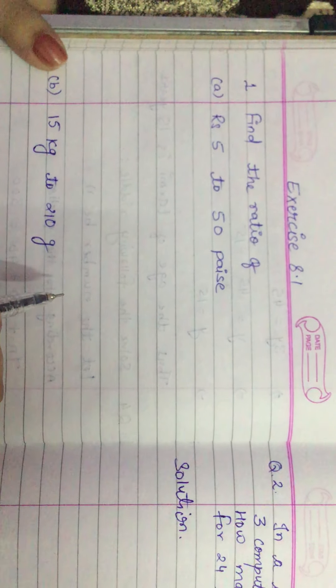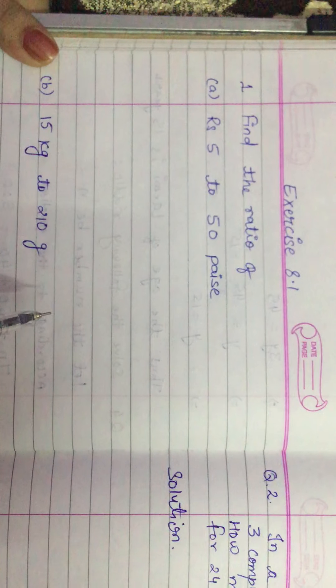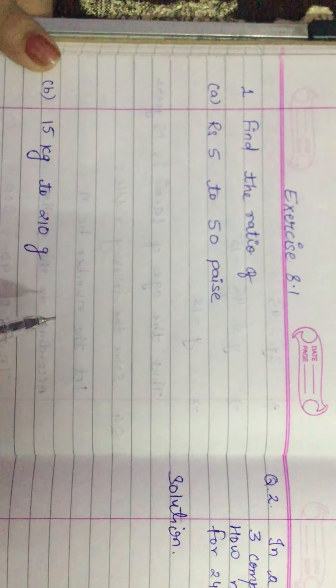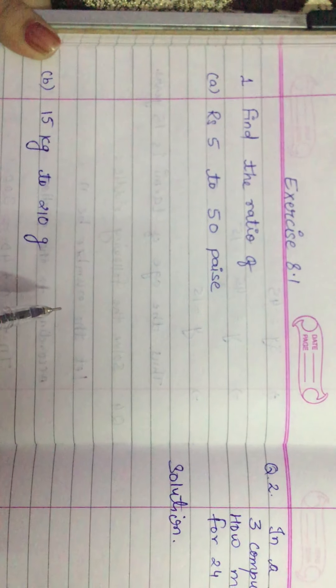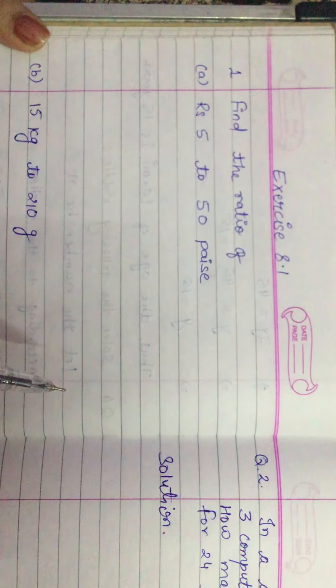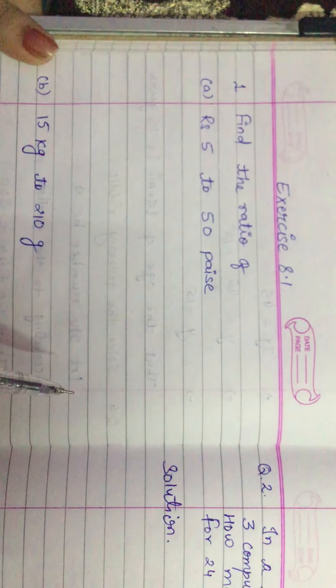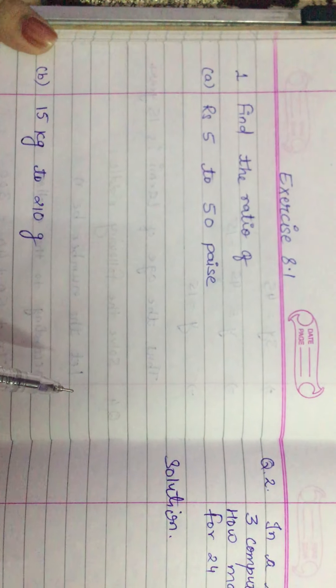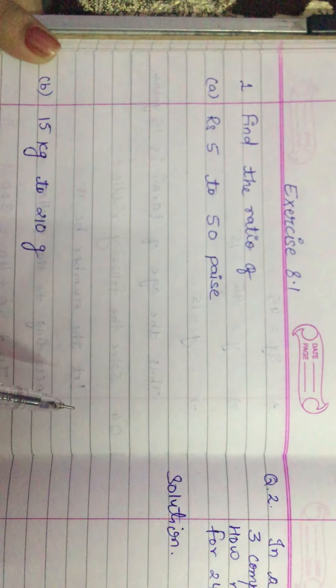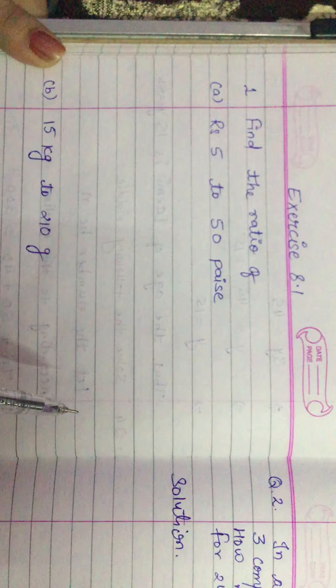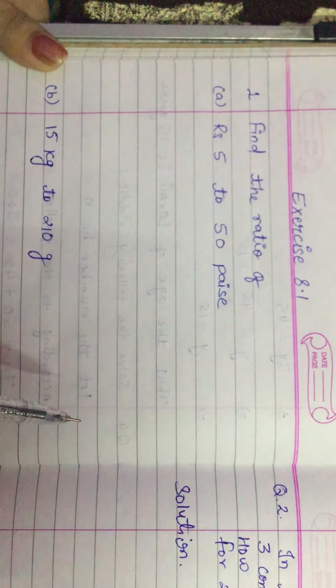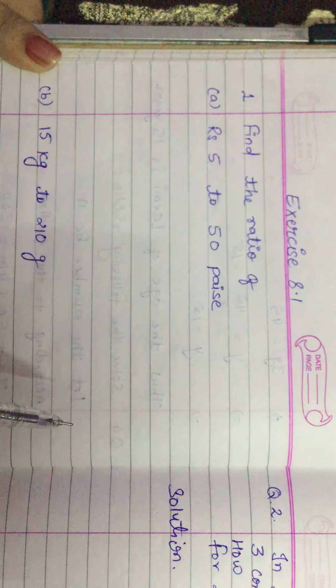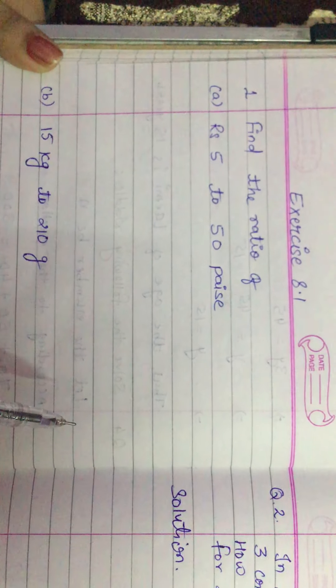Hello everyone, today we will start exercise 8.1 question number 1: find the ratio. We know that the ratio of two quantities of the same kind and in the same unit is a fraction that shows how many times one quantity is of the other.